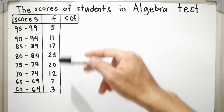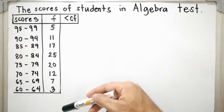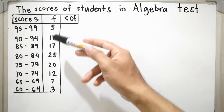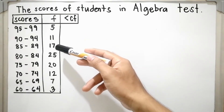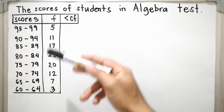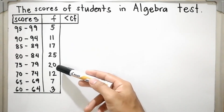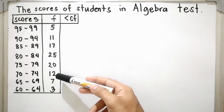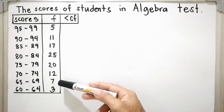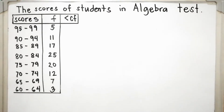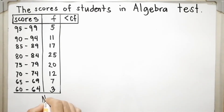To find how many students took the test, just add the frequencies: 5 plus 11 is 16, plus 17 is 33, plus 25 is 58, plus 20 is 78, plus 12 is 90, plus 7 is 97, plus 3 is 100. So there are 100 students who took the test, meaning N is equal to 100.